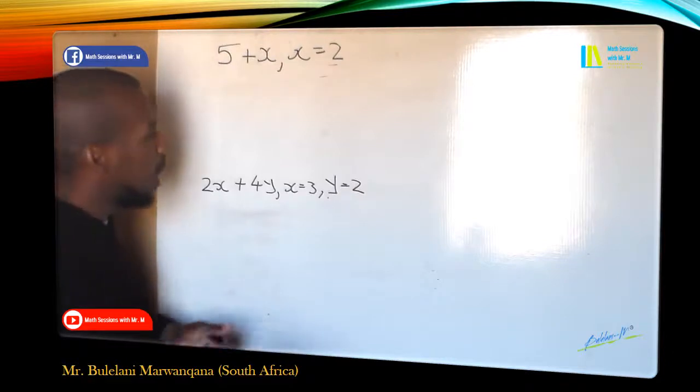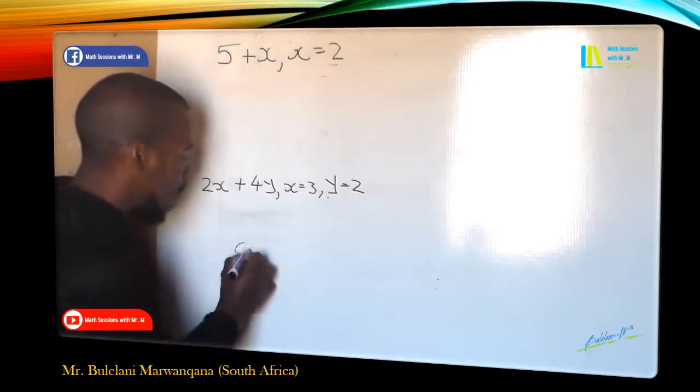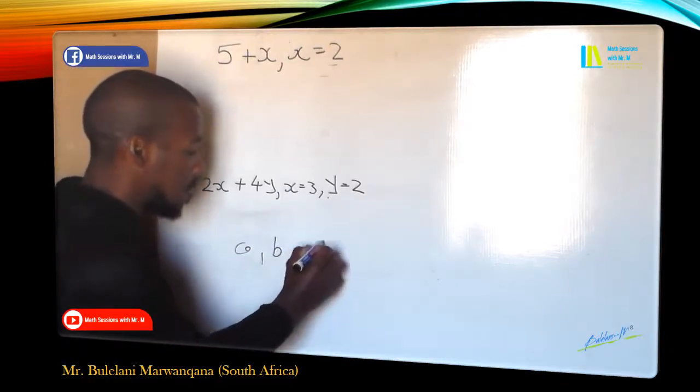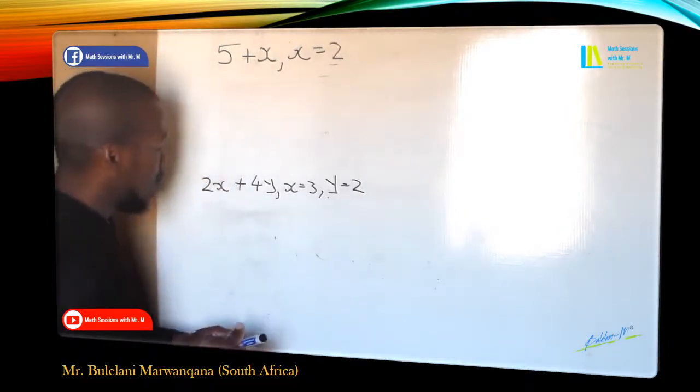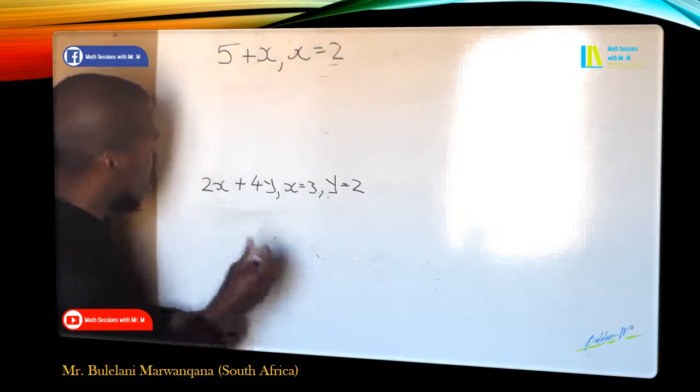Now the first thing that you must know, what is a variable? A variable is any letter A, B, C up to Z that is included in an expression or equation.